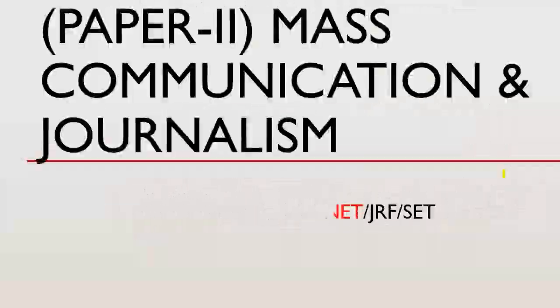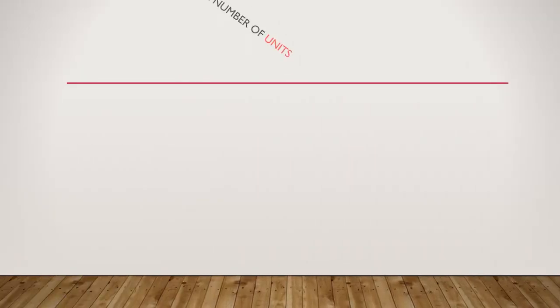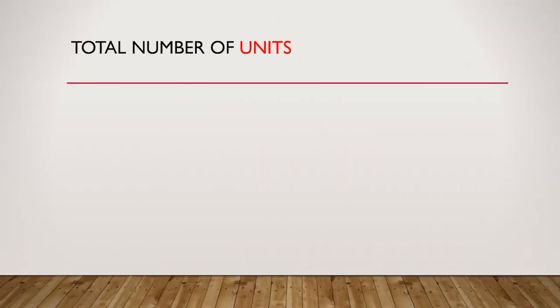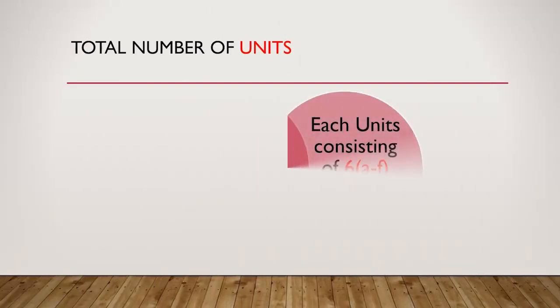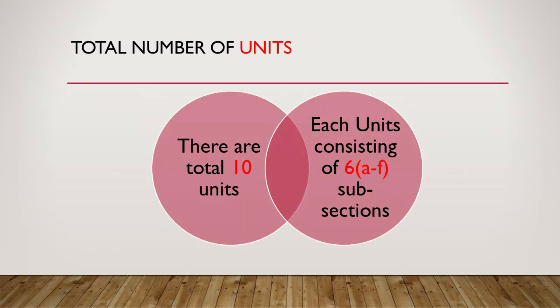Hello and welcome back. Today in this video, we will be talking about the syllabus of Journalism and Mass Communication, NTA UGC Net. The total number of units are 10 and each unit consists of 6 subparts or subsections.